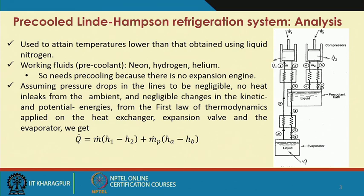We are using an auxiliary system to get the pre-cooling. If we apply the first law of thermodynamics, assuming negligible change in kinetic and potential energies, no pressure change during flow, and no heat leakage from the ambient, we can find the expression for Q. The first term is the same as in the simple Linde-Hampson; additionally there is a term involving ṁp, which represents the flow rate of the pre-coolant.